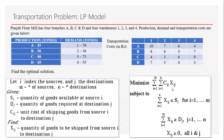In this video I am going to talk about the transportation problem, a linear programming problem, which I am going to solve with the Python library called PuLP. In a transportation problem, the objective of the linear programming problem is to minimize the transportation cost.